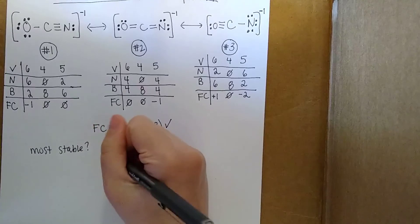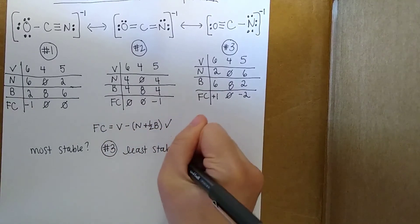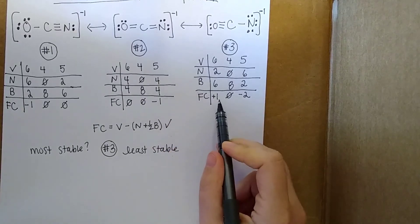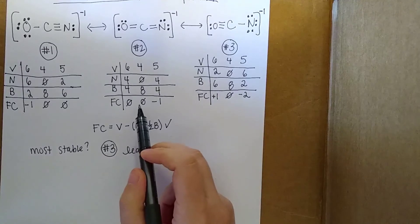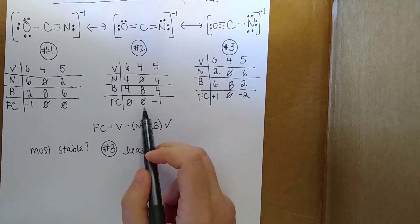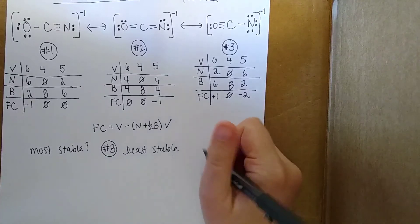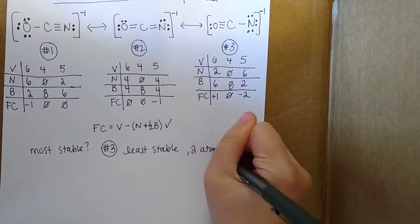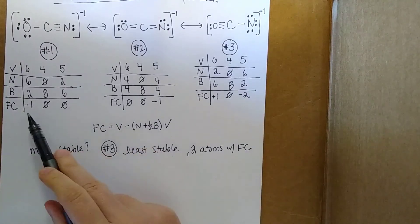Number 3 is the least stable. The reason being, both the oxygen and the nitrogen have formal charge, whereas in these cases, only the oxygen or the nitrogen has formal charge. So there are 2 atoms with formal charge, and in the other cases, there's only 1.